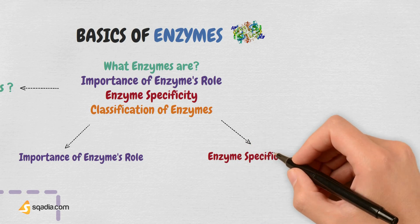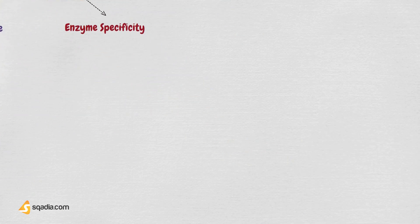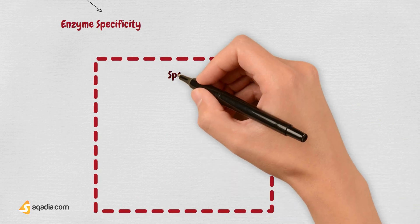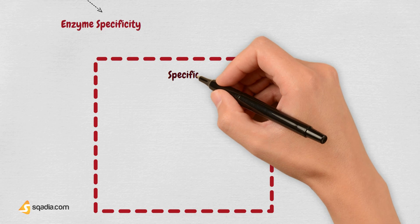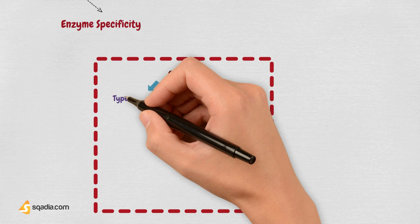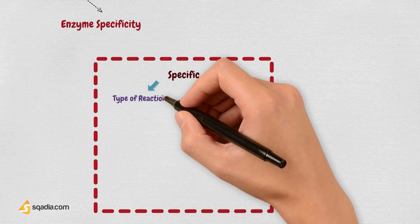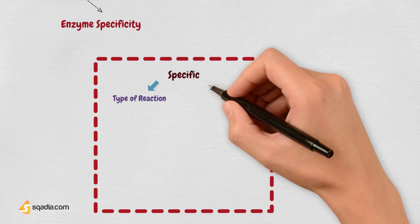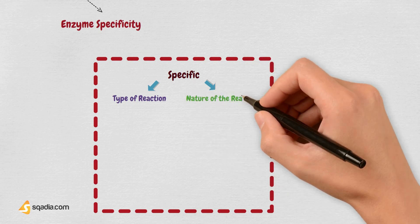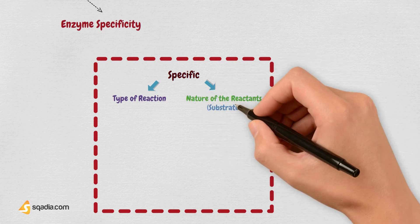Reaction and substrate specificity, which is really important to understand, is basically that the action of enzymes is usually very specific. This applies not only to the type of reaction being catalyzed, but also the nature of the reactants, which are the substrates that are involved in the reactions.